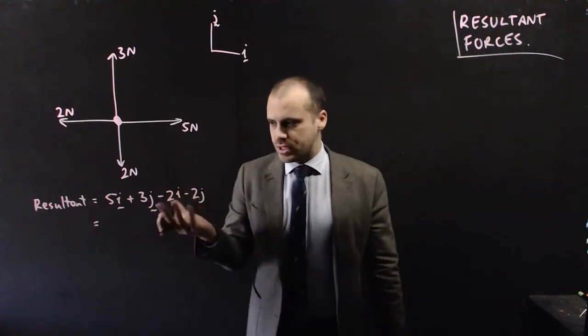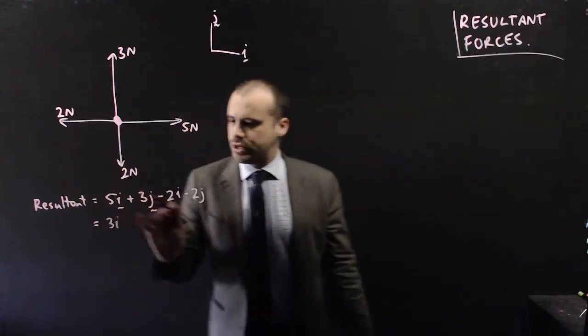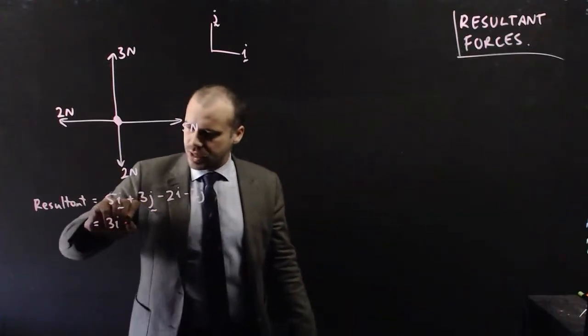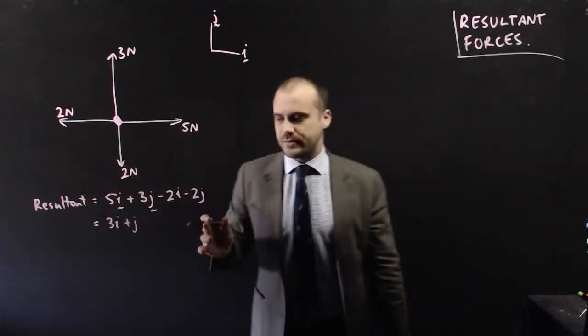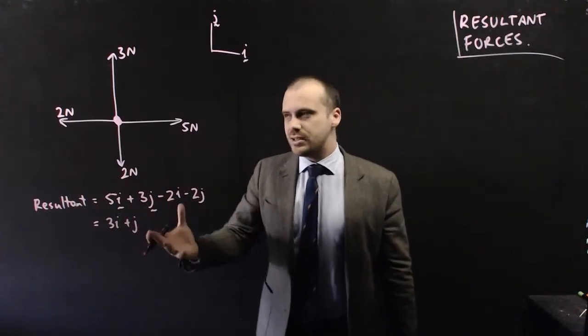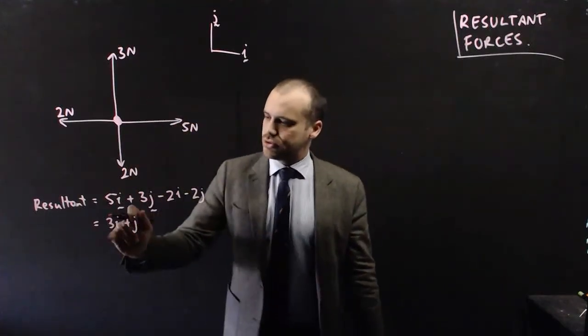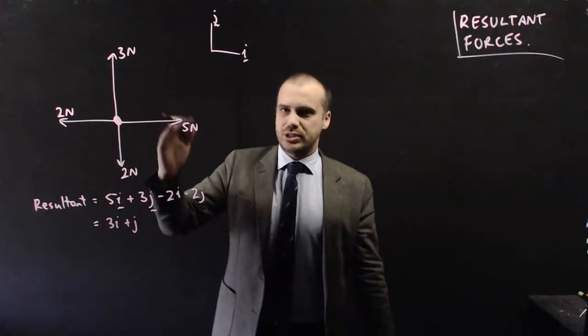Now, when we add these forces together, we get 5i minus 2i, which is 3i, and 3j minus 2j, which is just j. Okay, now that is our resultant vector. Now, what does it mean? It means that our object is going to start moving in the direction of 3i plus j.